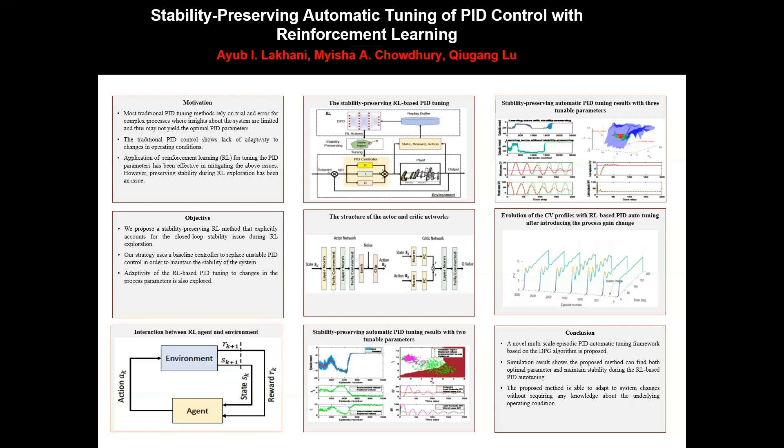There are four networks involved in the DPG framework. First, an actor network for selecting actions based on the current state. Second, a critic network for evaluating the current Q-value function. An actor target network for selecting the best actions to maximize the next-step Q-value, and a critic target network for evaluating the optimal Q-value for the next step.